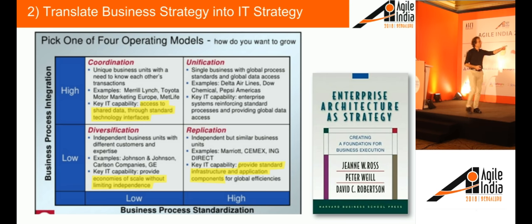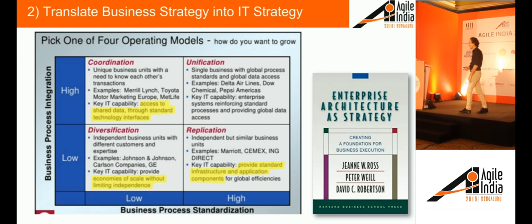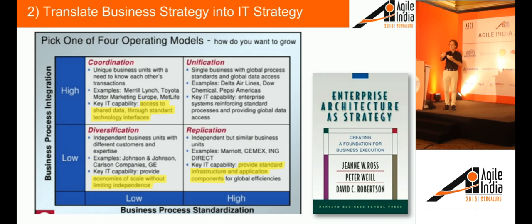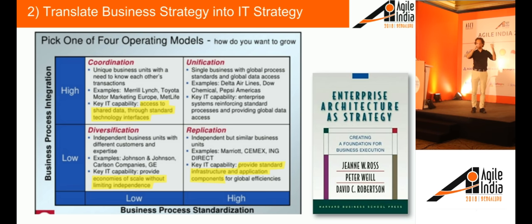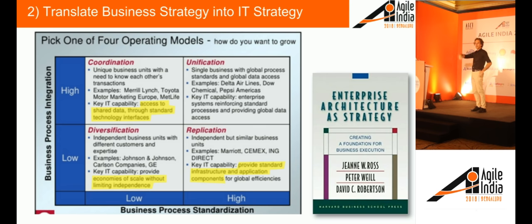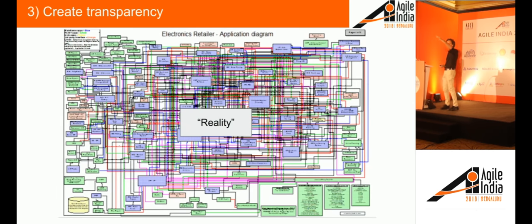If you have a business that is diverse but highly integrated, then integration and data standardization — data warehouse, data lakes — are much more valuable. You can see that the nature of the business, what we call the operating model, makes certain IT strategies more or less valuable. If you're highly integrated, things like enterprise service bus integration and data warehousing will have high value. They will have less value for a McDonald's-type operation. That is the critical translation step between business strategy and IT strategy.